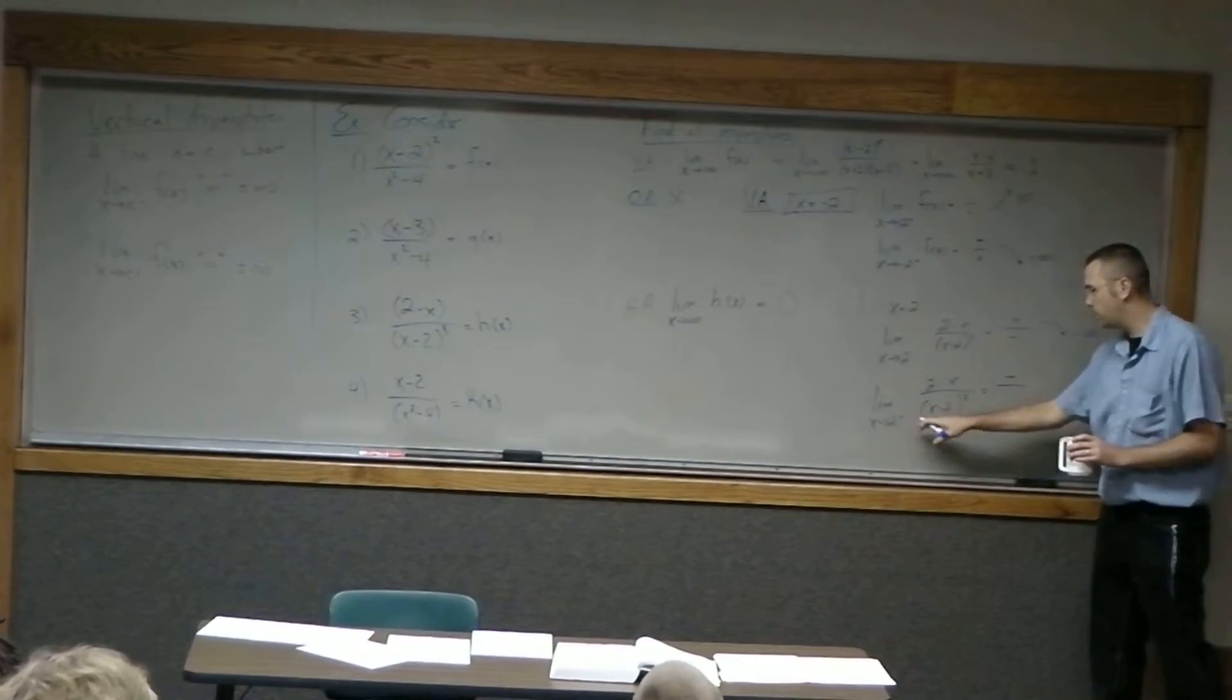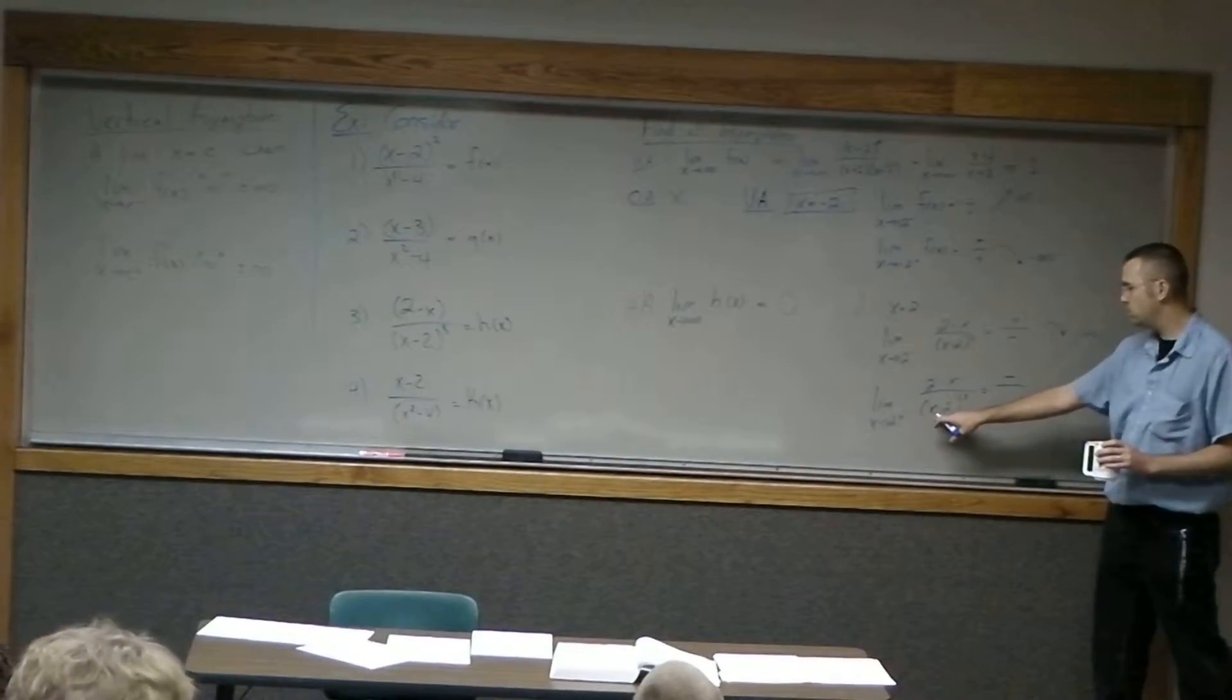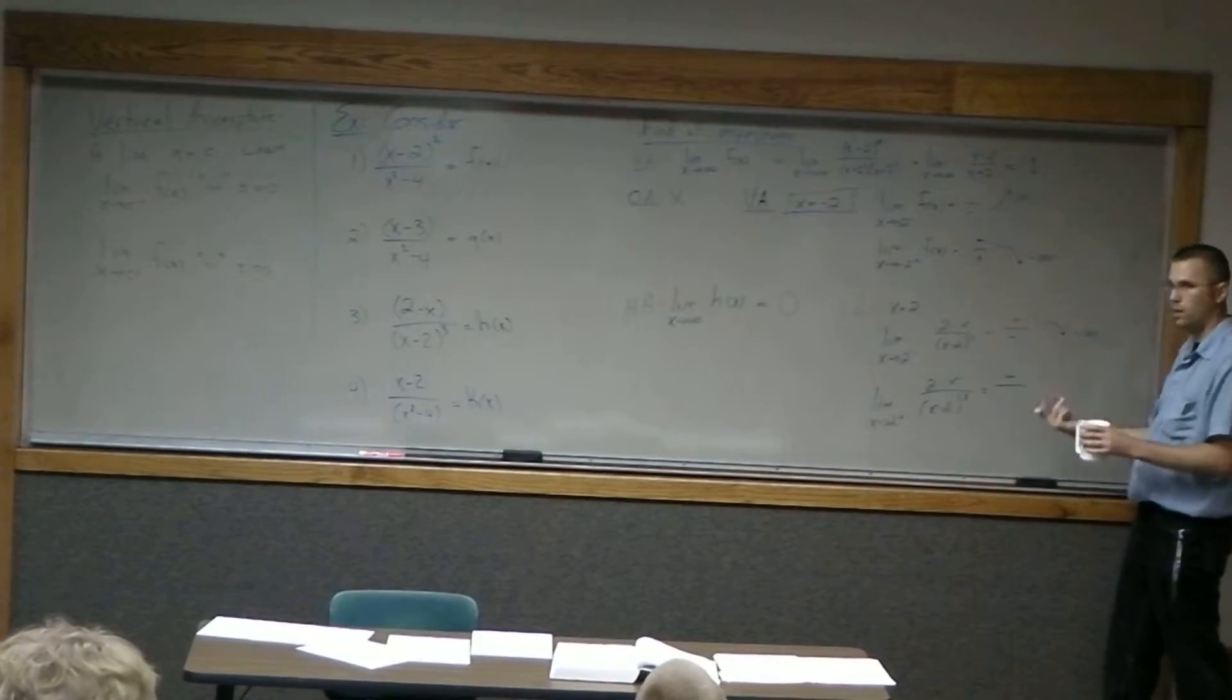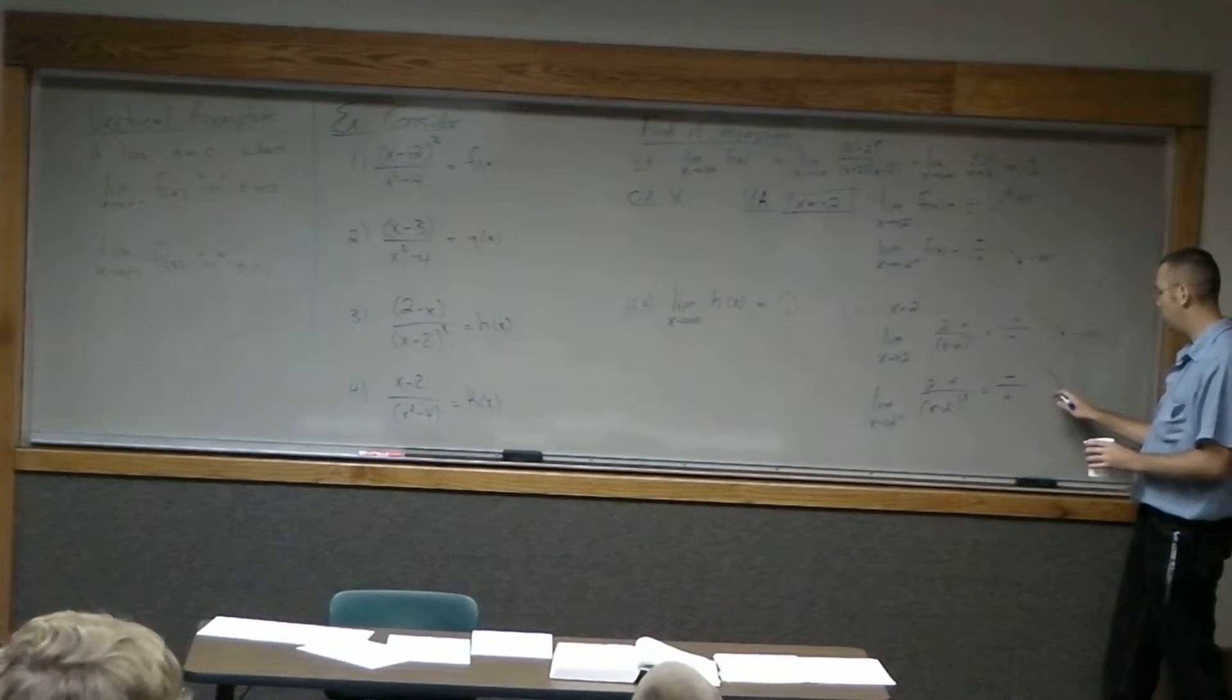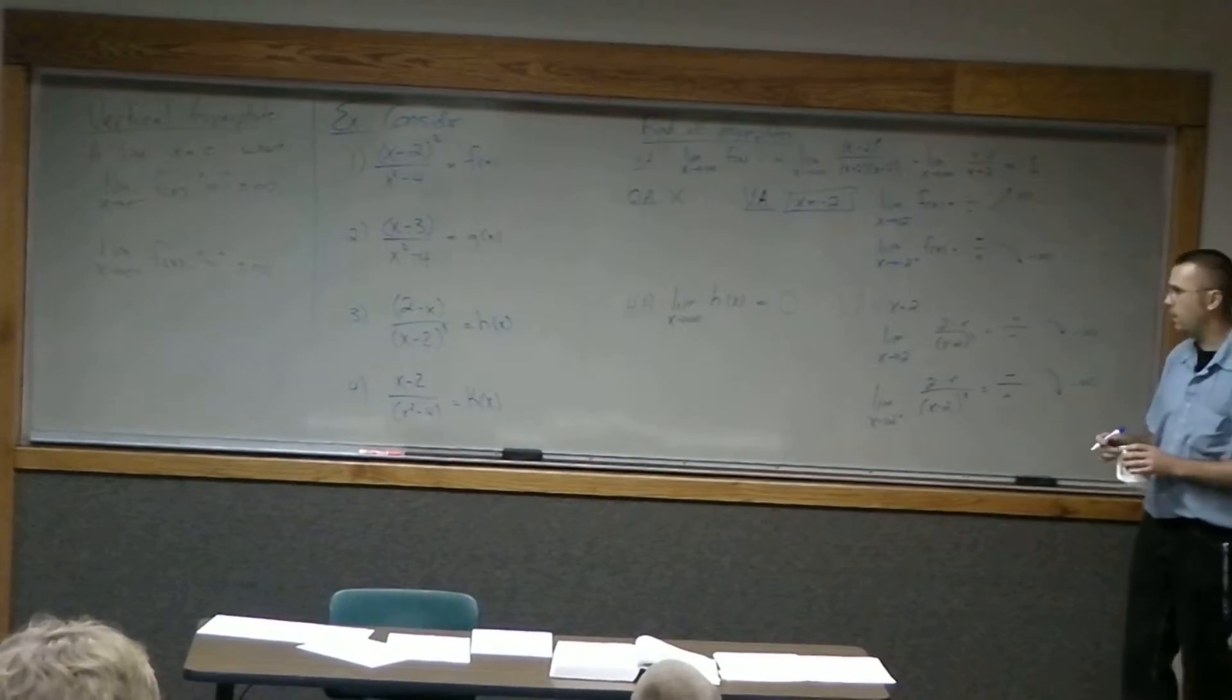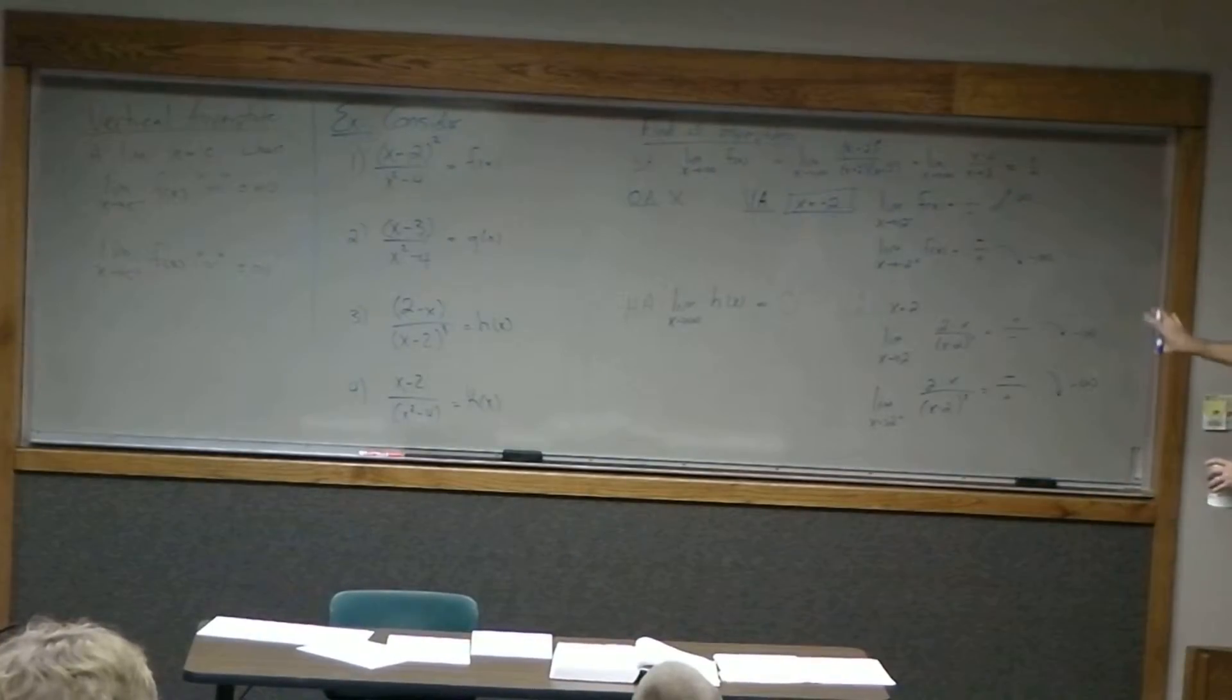In the denominator, something slightly bigger than 2, well the denominator is going to be positive, and so what we see here is that this also goes off to minus infinity. Both of these are going off to minus infinity.